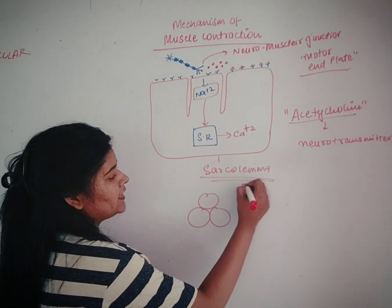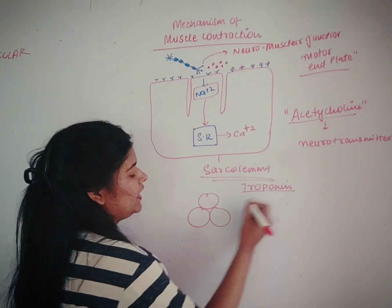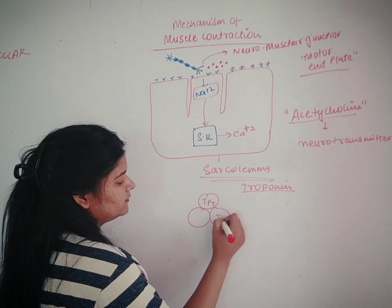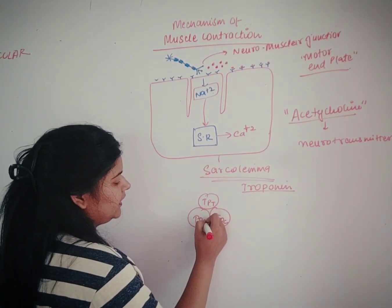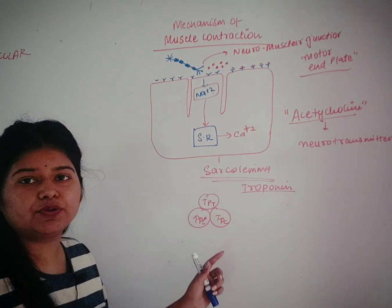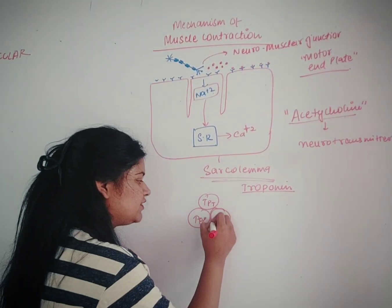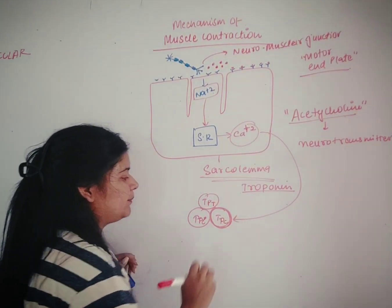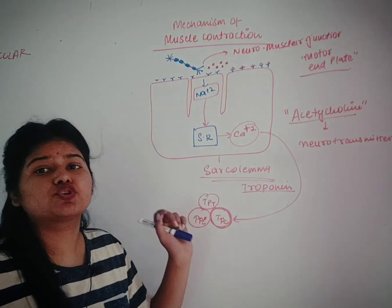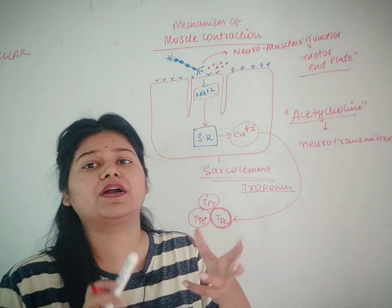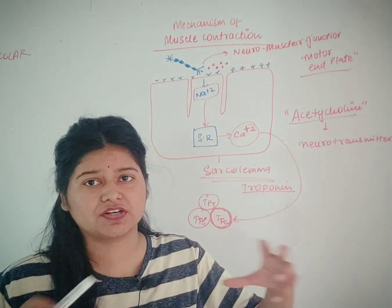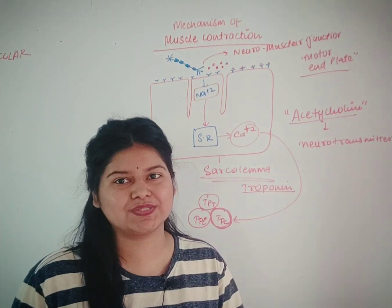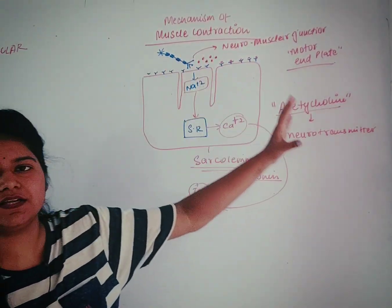There is a subunit of actin called troponin. Troponin has three subunits: TpC, TpT, and TpI. The calcium ions get attached to TpC, which is the troponin C subunit. Finally, the actin undergoes some conformational changes in its structure, and hence actin is able to bind with myosin.